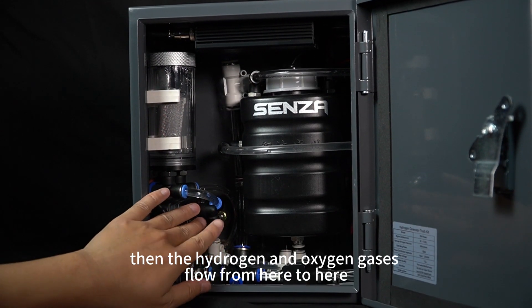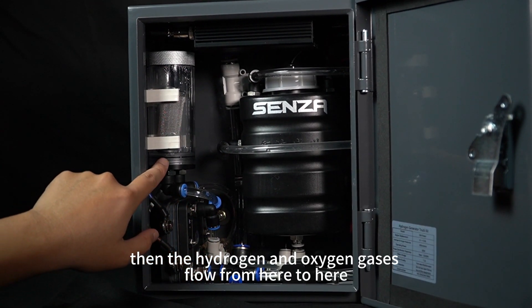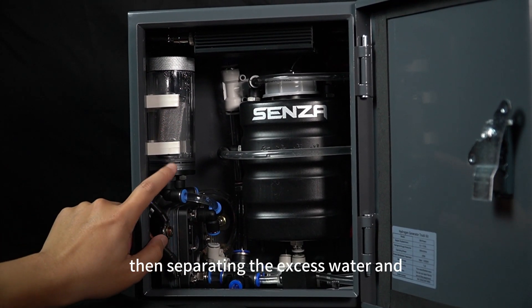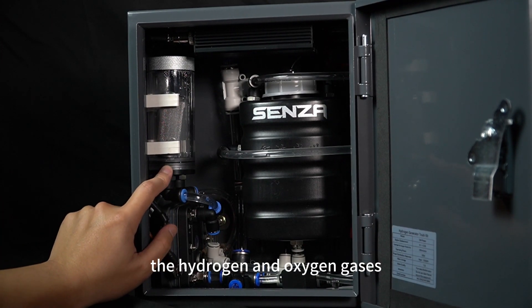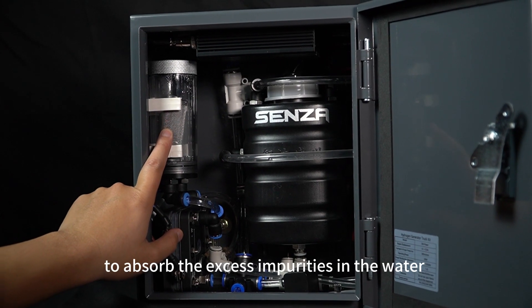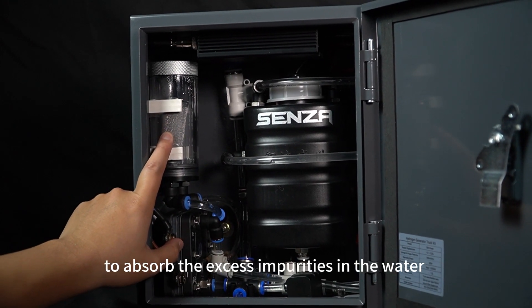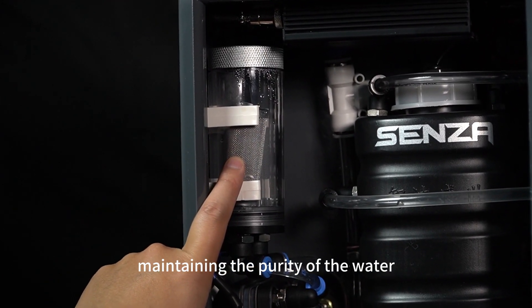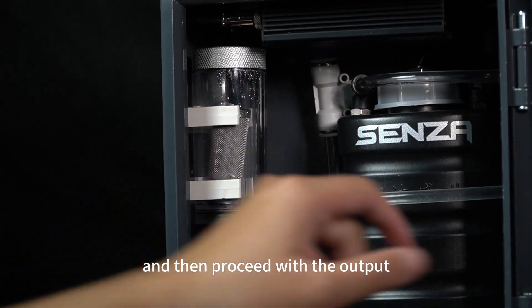Then the hydrogen and oxygen gases flow from here to here, separating the excess water and the gases. Inside we have an epoxy resin to absorb excess impurities in the water, maintaining the purity, and then proceed with the output.